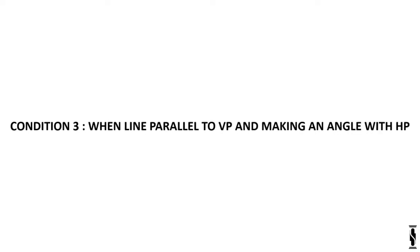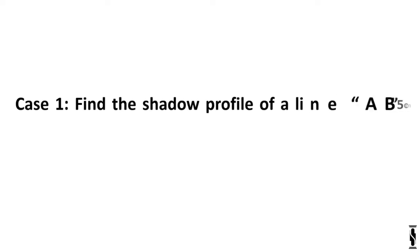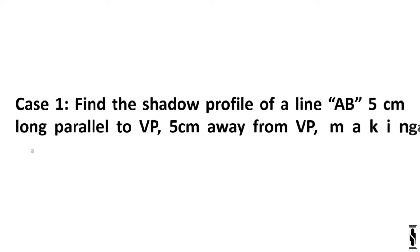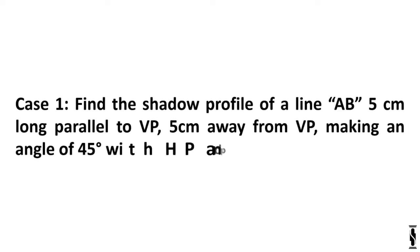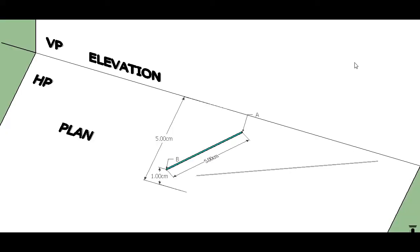Let's start with condition number 3: when a line is parallel to VP and making an angle with HP. Case 1: A line AB, 5cm long, parallel to VP, 5cm away from VP, making an angle of 45 degrees with HP, and point B is 1cm above the HP.